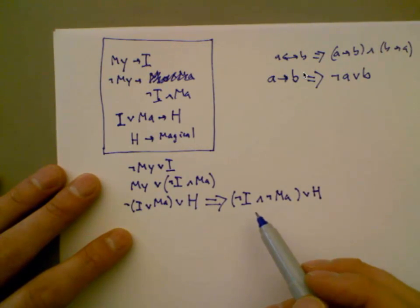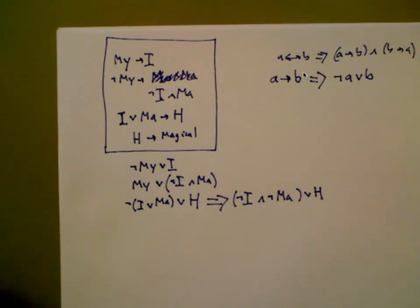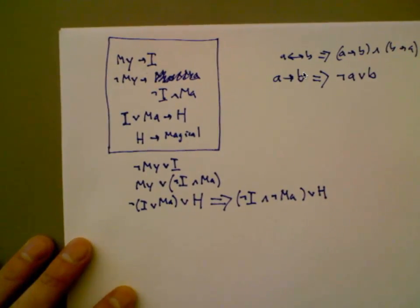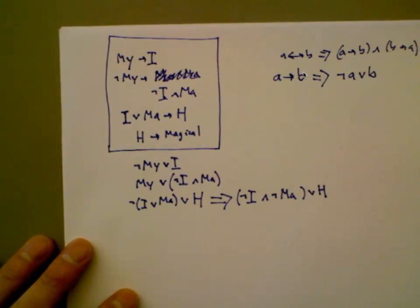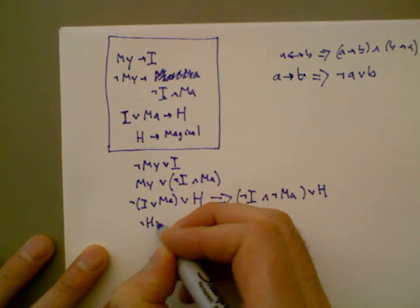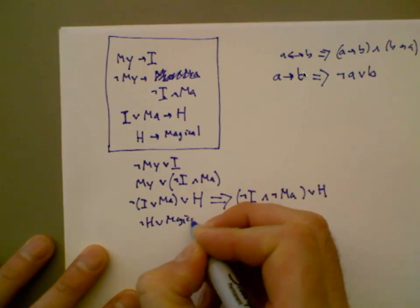In CNF, negation has to cuddle up right next to the variables. If you ever see negation trying to flex its muscles and surround two terms at once, push it in — cuddle it right up next to the variable. And this last one is so trivial, even a professor can do it.